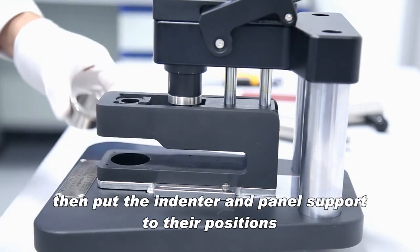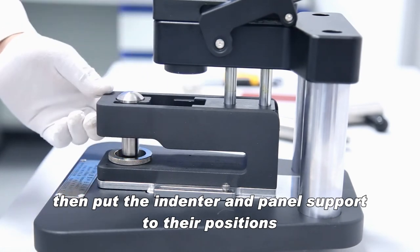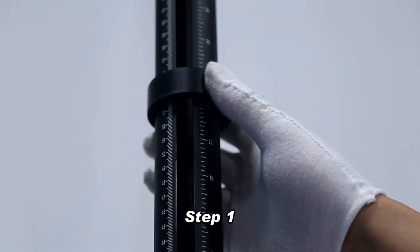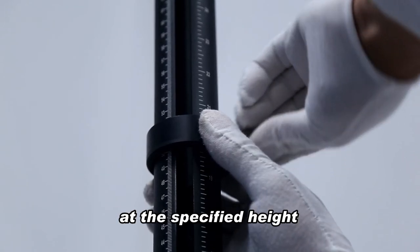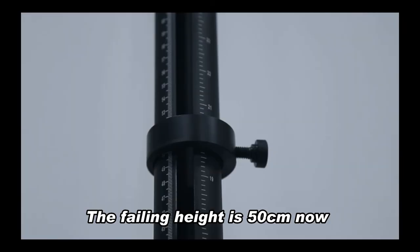Then put the indenter and panel support to their position. Adjust the height limit ring to make its lower edge align at the specified height. The falling height is 50 centimeters now.